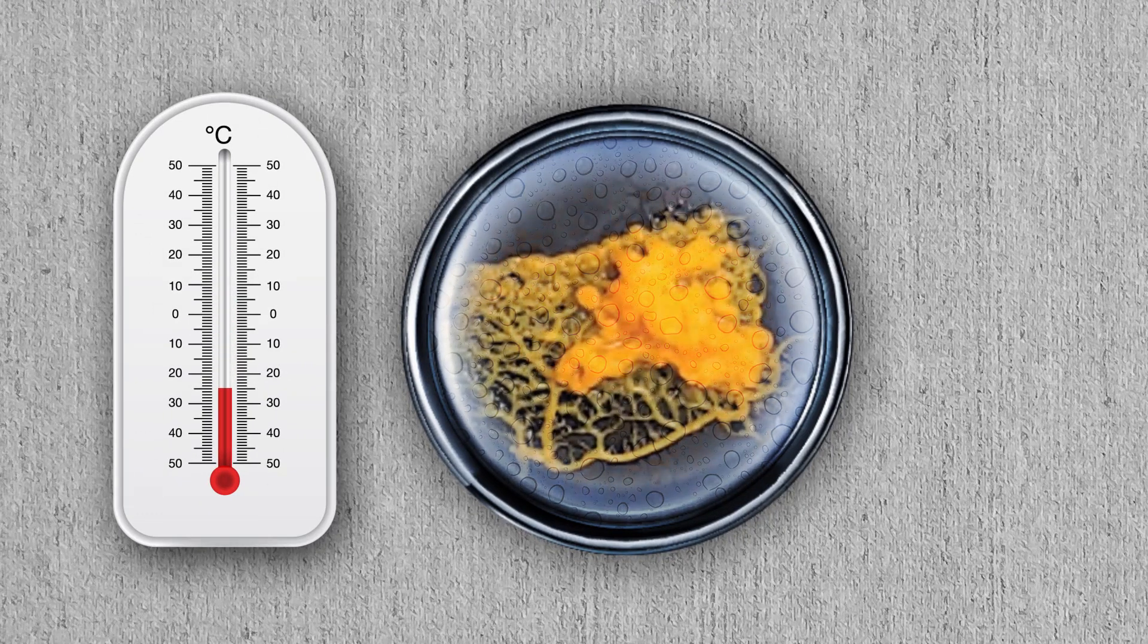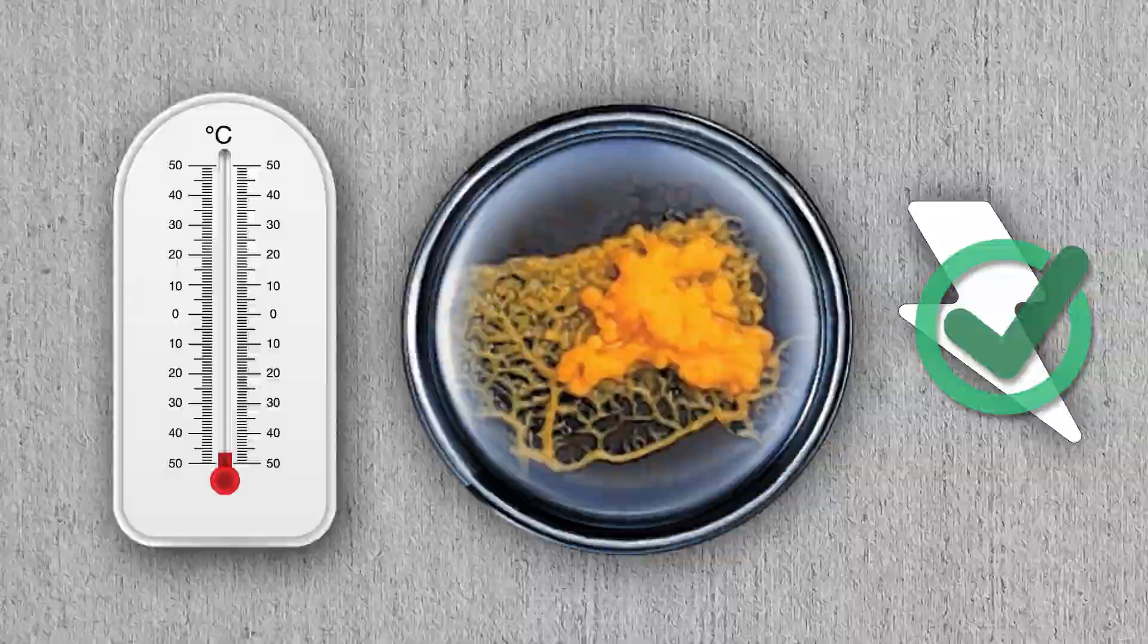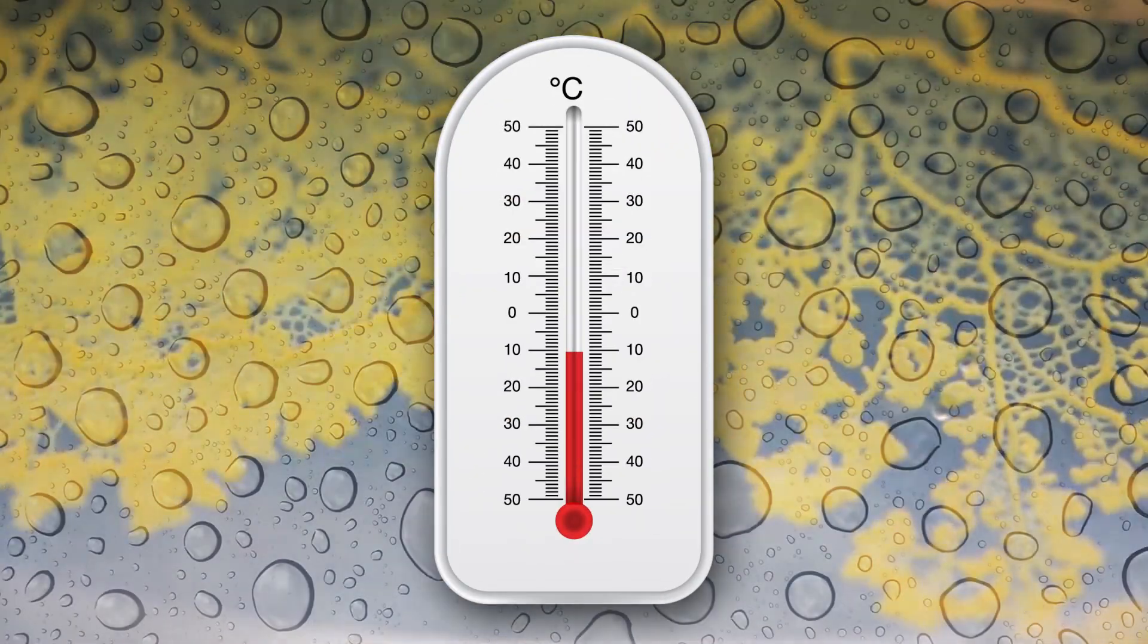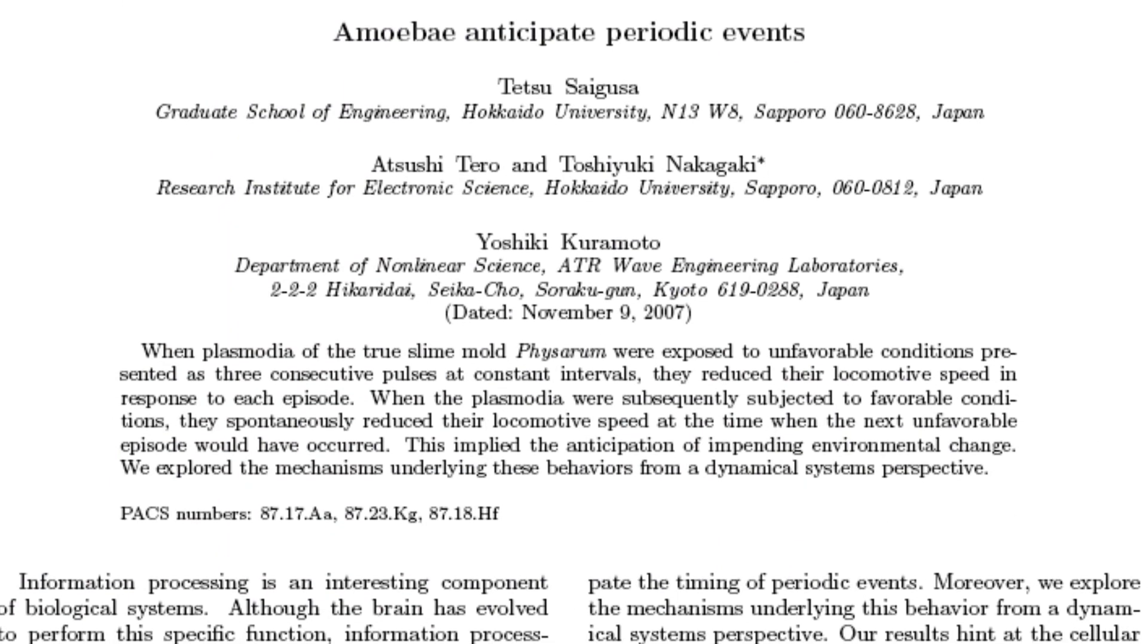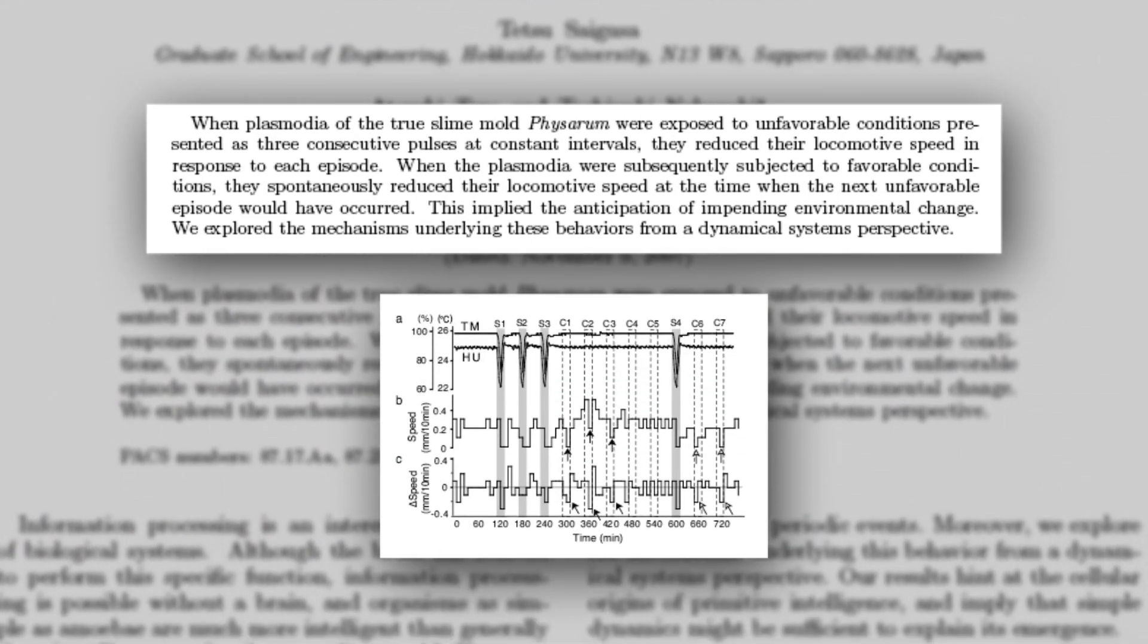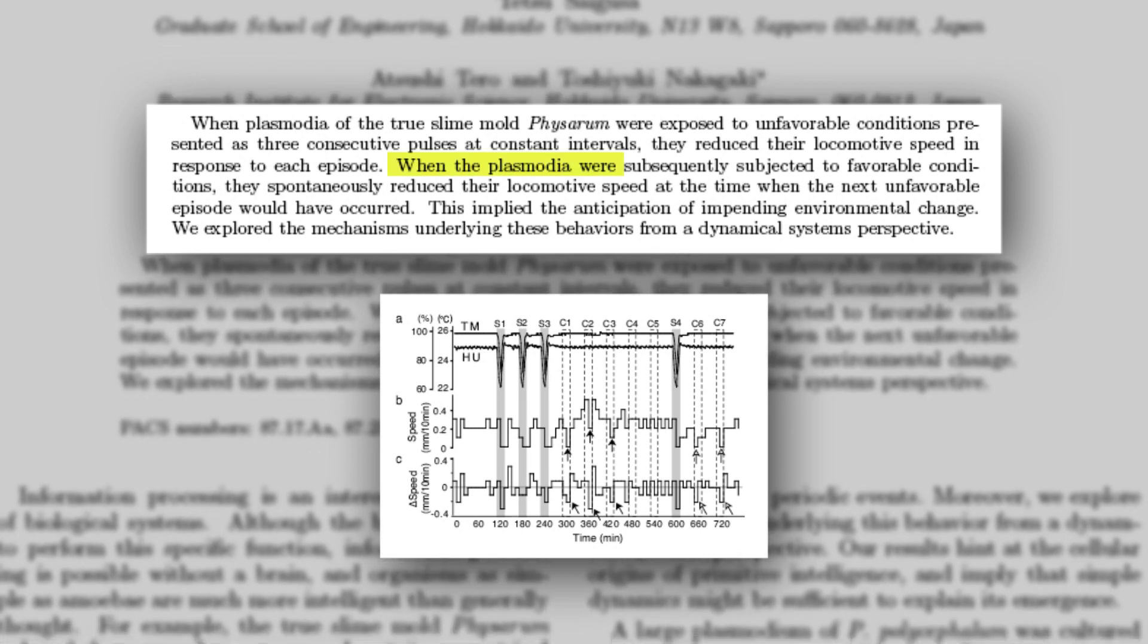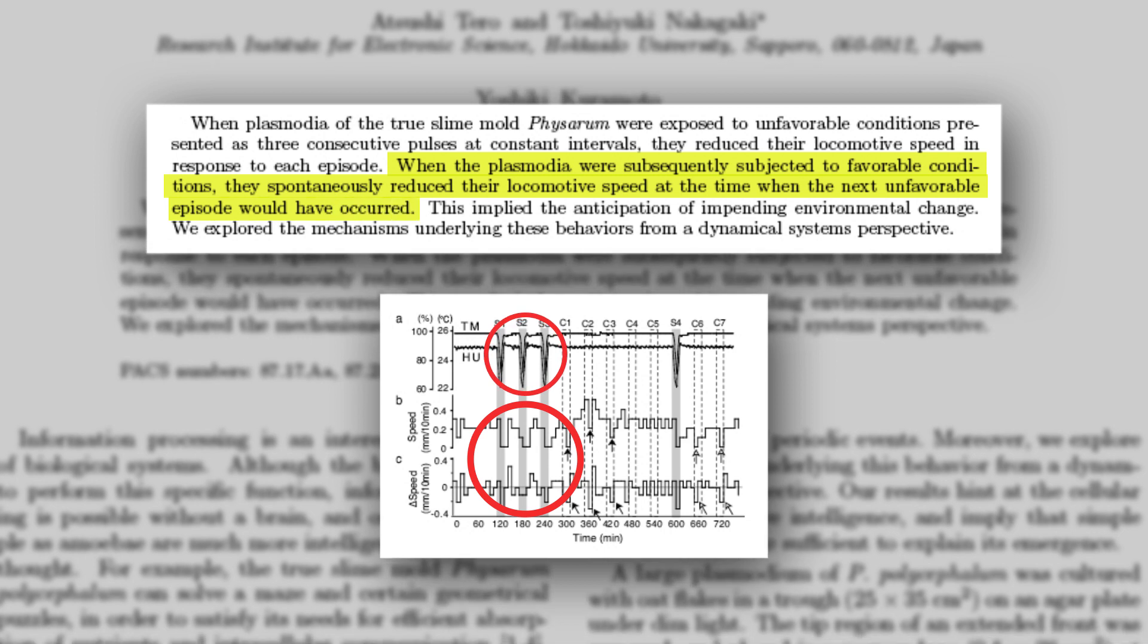As the temperature and humidity dropped, the slime mold slowed its movement to conserve energy. After several cycles, researchers suddenly changed things up. They followed several regular cycles of changing environmental properties with a period of consistent humidity and temperature, and the slime mold actually slowed its movement in anticipation of a change in temperature and humidity.